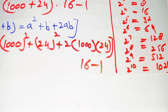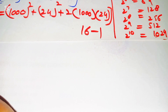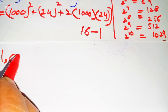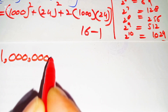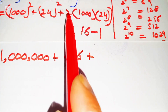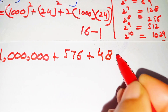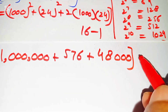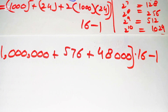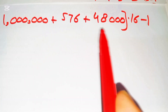Now the next step: 1000 squared is 1,000,000, plus 24 squared is 576, plus 2 multiplied by 1000 multiplied by 24 is equal to 48,000. Now we have this times 16, then minus 1.